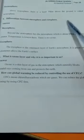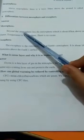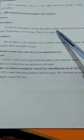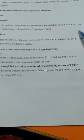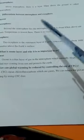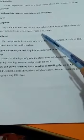Differentiate between Mesosphere and Exosphere. Mesosphere: What is beyond the stratosphere? We call it the mesosphere. It is about 85 km above our planet. Temperature is lowest there. There is no ozone.